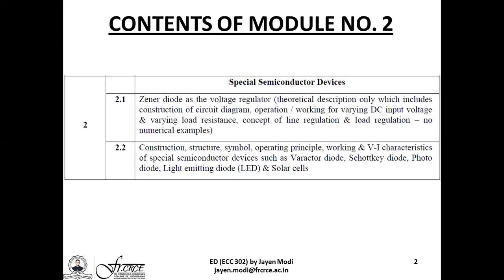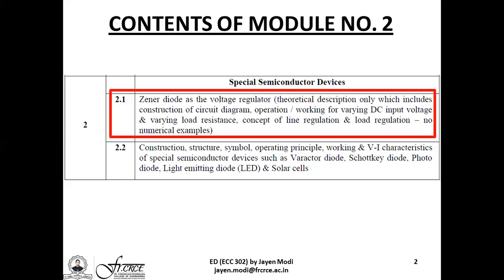Unit number 2.1 contains the Zener diode as well as its operation as a voltage regulator, while unit 2.2 covers different devices such as Varactor diode, Schottky diode, photodiode, light emitting diode, and solar cells. Today we will be focusing only on unit number 2.1, which covers the Zener diode and its application as a voltage regulator.